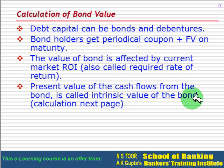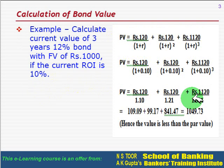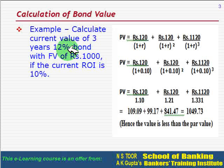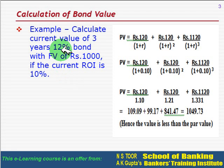Now we shall calculate this value. Here we have a problem: calculate the current value of a three-year, 12 percent bond with a face value of rupees 1000, if the current rate of interest is 10 percent. So the coupon rate of the bond is 12 percent but the current interest rate is 10 percent.